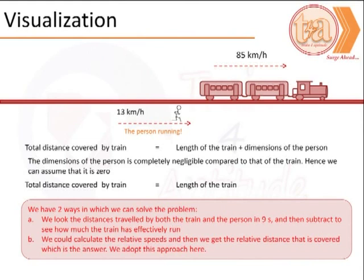However, the total distance that the train would have covered in order to completely overtake him would be the length of the train and the dimension of the person.